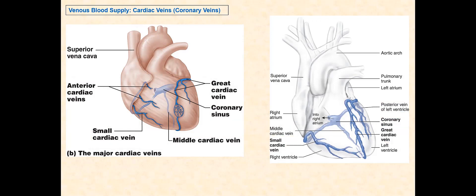Furthermore, all these cardiac veins are considered systemic veins because they are part of the systemic circuit, and the deoxygenated blood that flows through them is part of the systemic circulation.